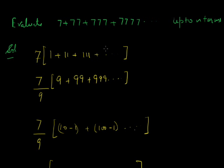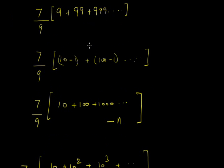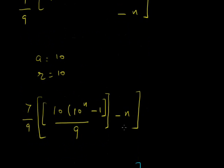Whenever we get this kind of problem — with repeated digits like 1,11,111 or 2,22,222 — we try to convert those numbers into 9s so that we get (10 minus 1) form. This gives us the GP series 10, 100, 1000, and the minus 1 repeated N times becomes minus N. That is the key approach.